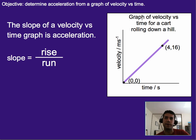Alright, so we've got a graph over here of velocity versus time - time on the x-axis, velocity on the y-axis - and it's for a cart rolling down a hill. We can see the velocity starts at zero and ends up at 16, and it takes four seconds based on that x value.